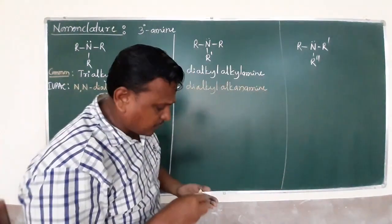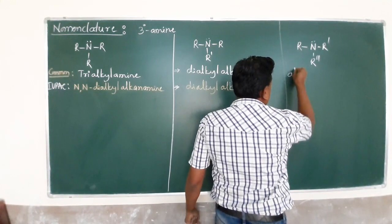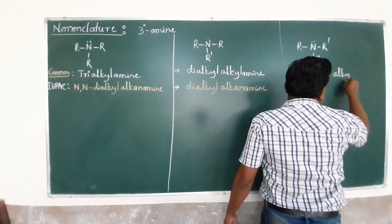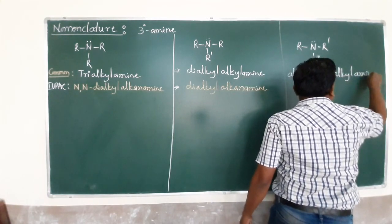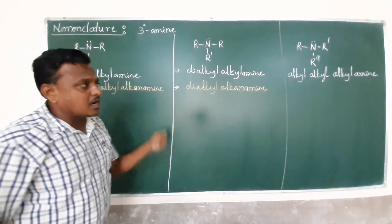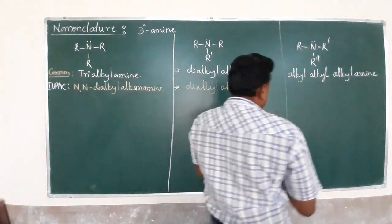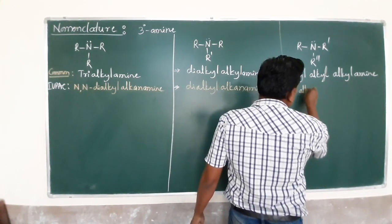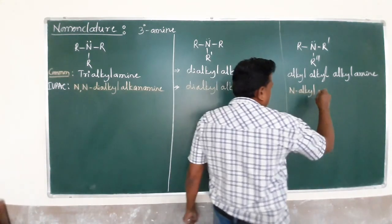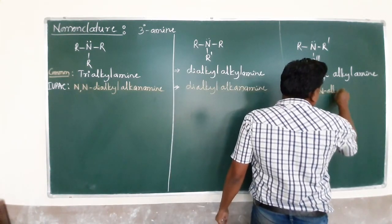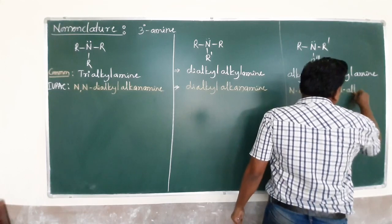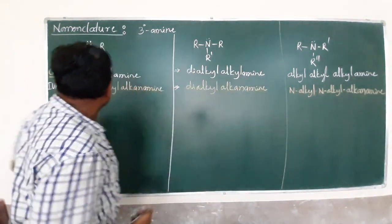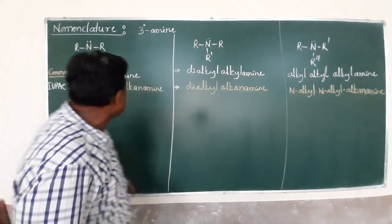If all three alkyl groups are different, you have to name them in alphabetical order. The common name is alkyl, alkyl, alkyl amine. In IUPAC, it is defined by alphabetical order: N-alkyl, N-alkyl, alkylamine — where the last alkylamine term represents the longest carbon chain.